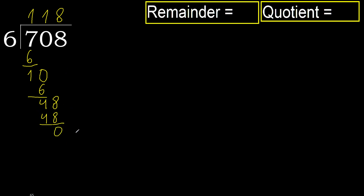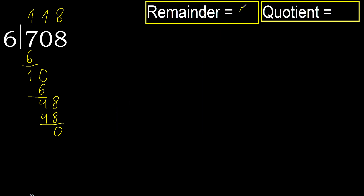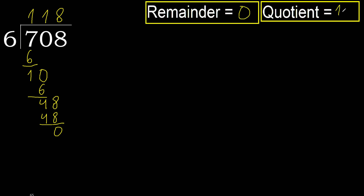That is not a number, therefore finish. 0. Therefore, 708 divided by 6 is 118.